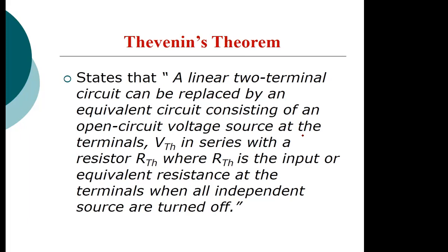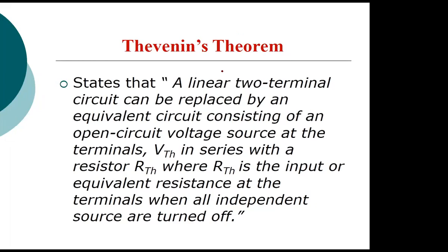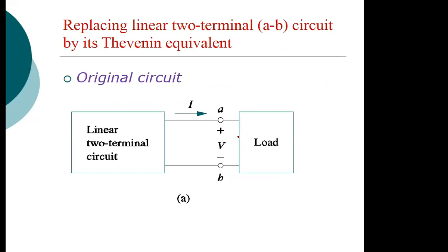In other words, we are saying two-terminal — that means there should be only two points of reference on the circuit. Then, linear bilateral means the behaviour of the components or their properties will not change due to the direction of the current. In other words, we have basically passive components. So we are saying the network will be replaced by a voltage source in series with an equivalent resistance.